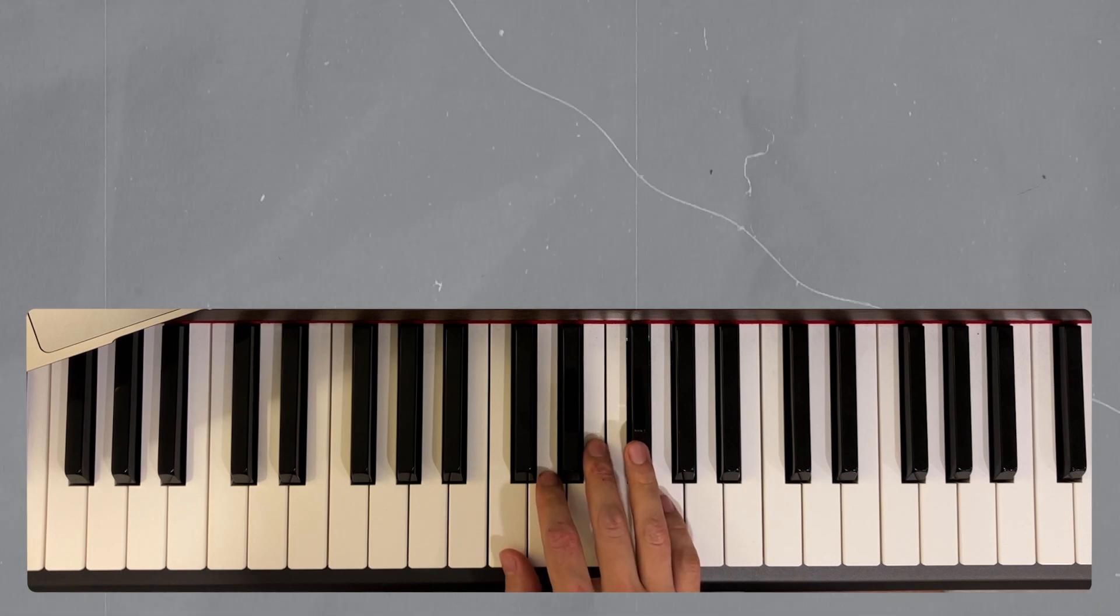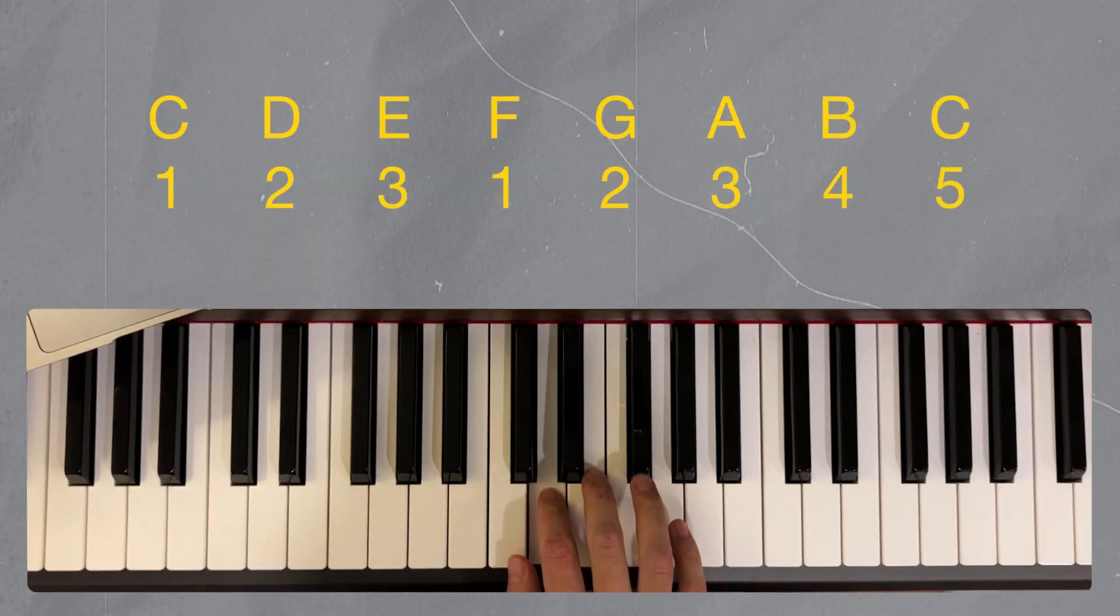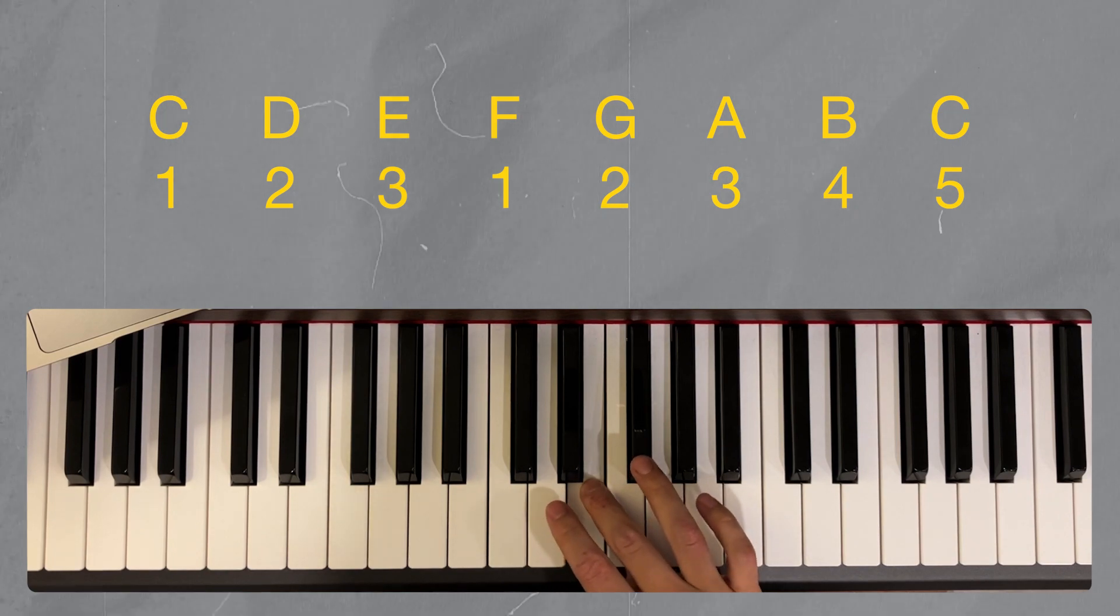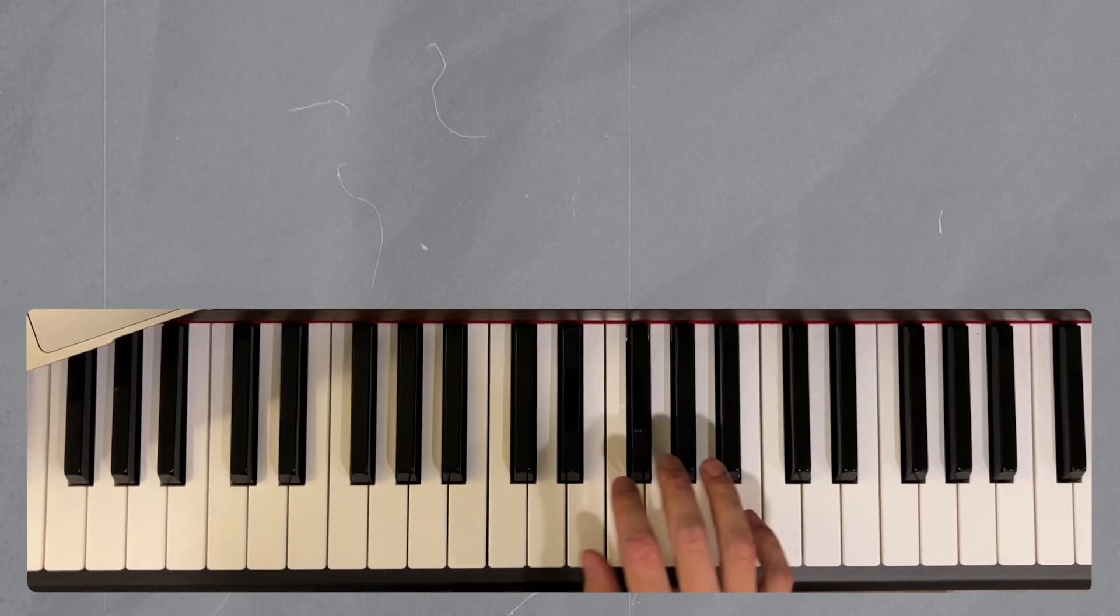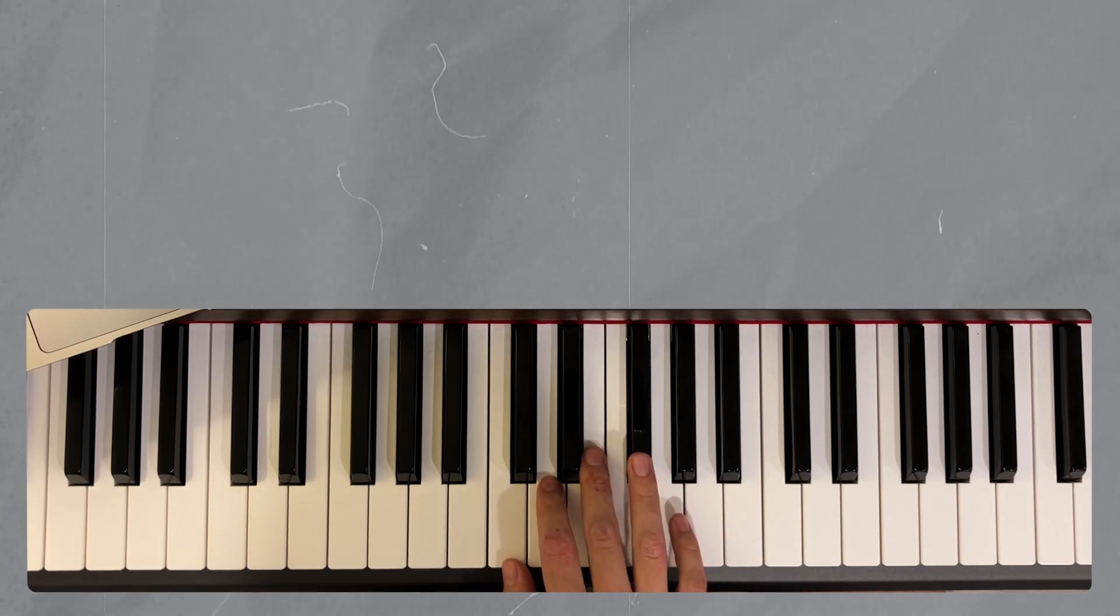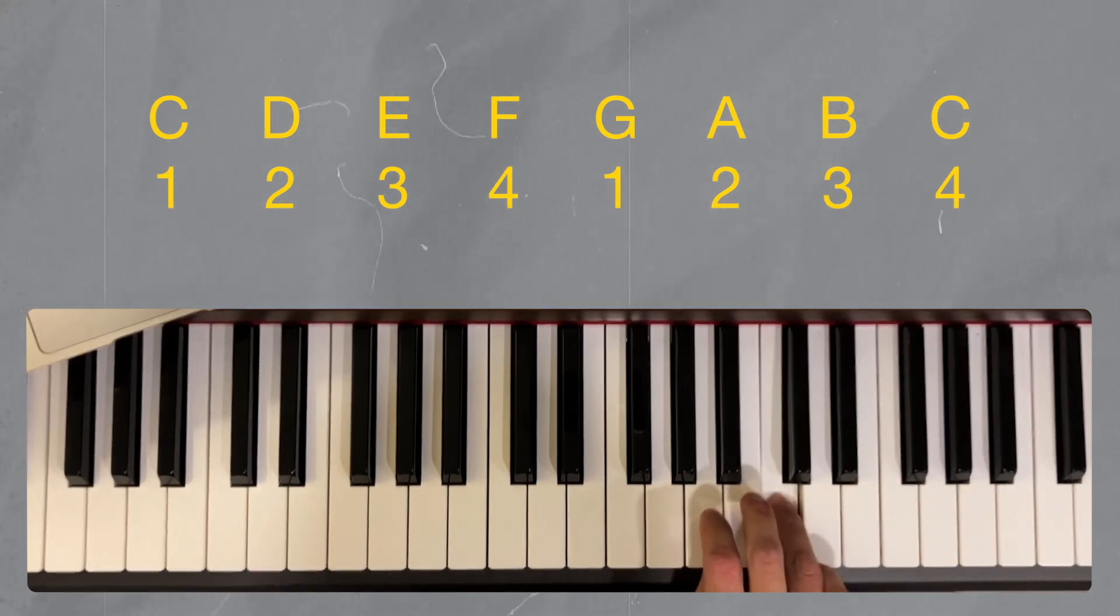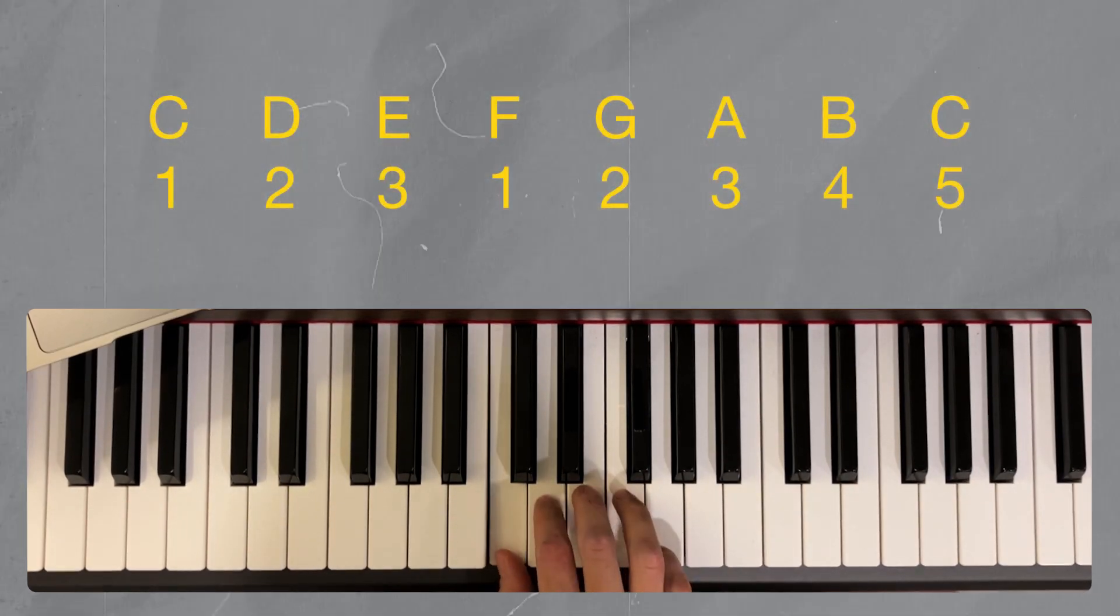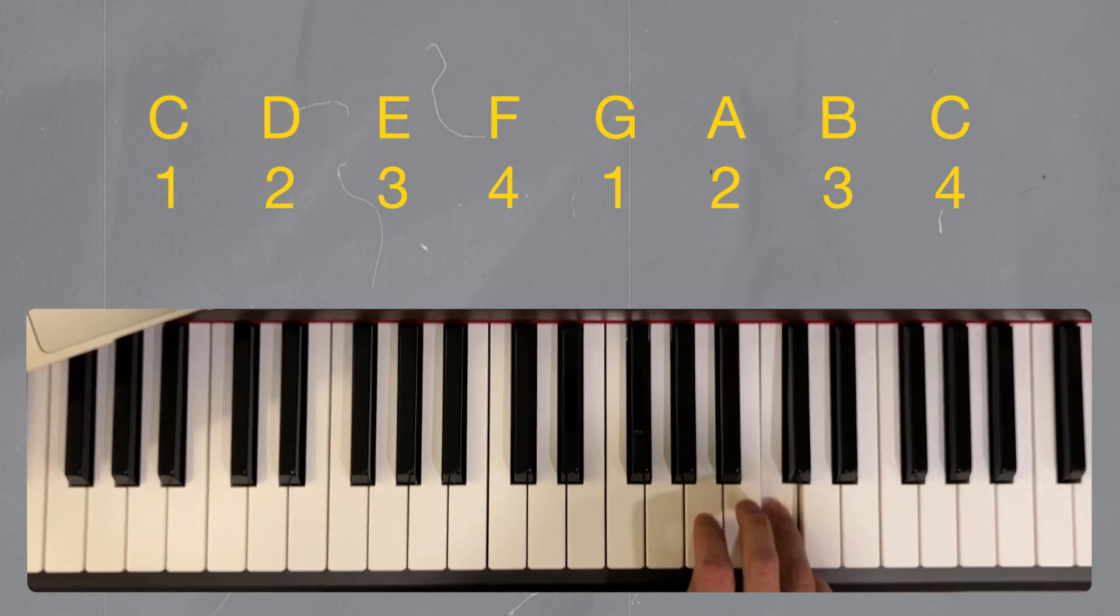For C major there's two fingerings that I often play. The first one is 1, 2, 3, then 1, 2, 3, 4, 5. Sometimes I'll play it like 1, 2, 3, 4, 1, 2, 3, 4, 1, 2, 3, 4, 5, 1, 2, 3, 4, 1, 2, 3, 4.